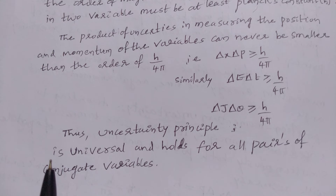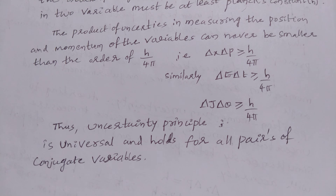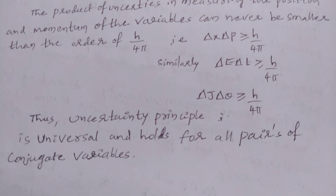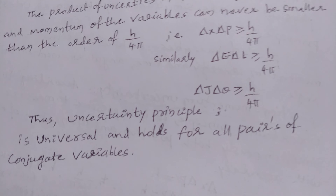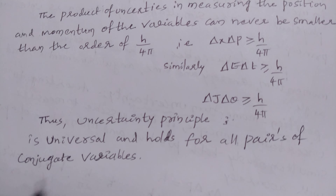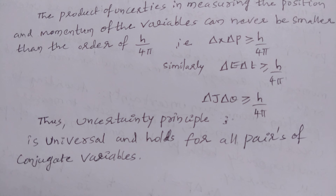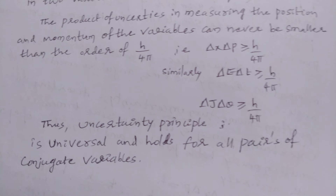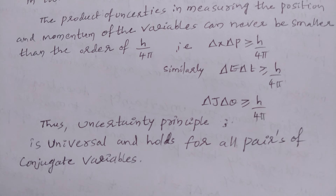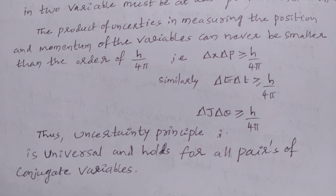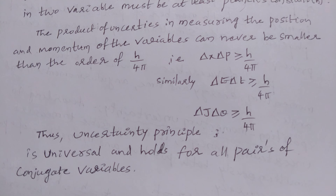Thus, the uncertainty principle is universal and holds for all pairs of conjugate variables. This is the uncertainty principle. Thank you, students. Now see the answer from starting to ending.